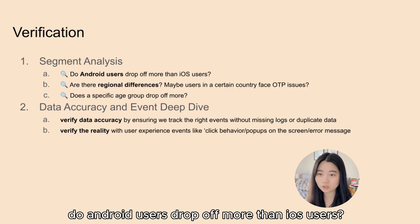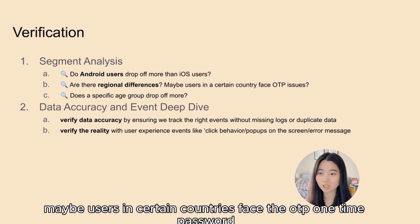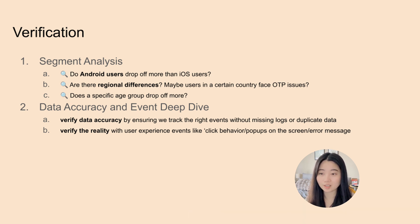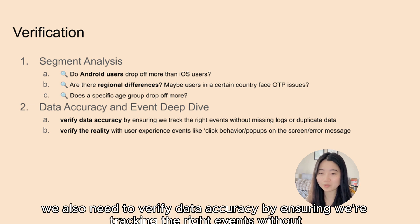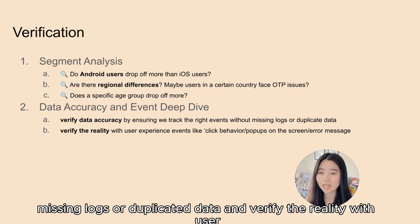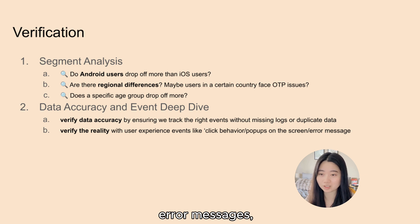Do Android users drop off more than iOS users? Are there regional differences? Maybe users in certain countries face OTP (one-time password) issues. Does a specific age group drop off more? We also need to verify data accuracy by ensuring we're tracking the right events without missing logs or duplicated data, and verify reality with user behavior events like click behavior, pop-ups on the screen, and error messages.